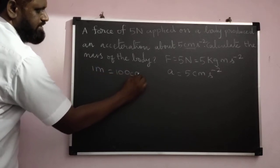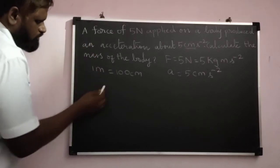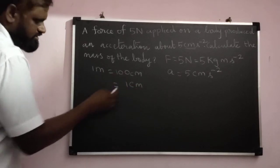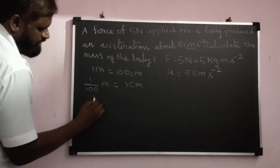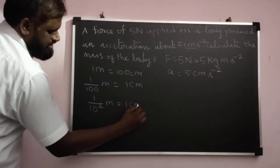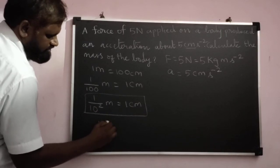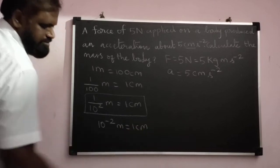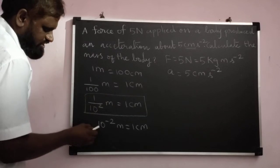For that purpose, 1 meter is equal to 100 centimeter. We know this from the basics. I need 1 centimeter, so the hundred is going to the other side. So 1 by 100 meter or 1 by 10 power 2 meter is equal to 1 centimeter. This is an important relation. 10 power minus 2 meter is equal to 1 centimeter.